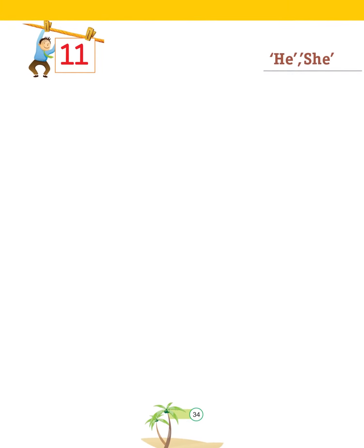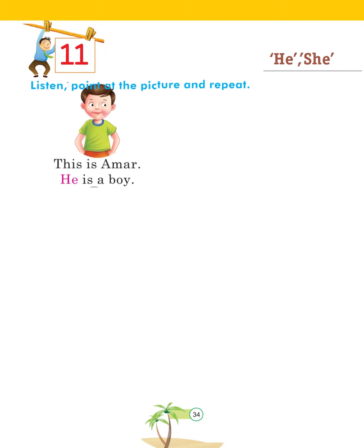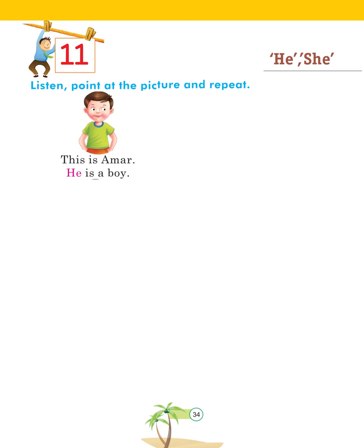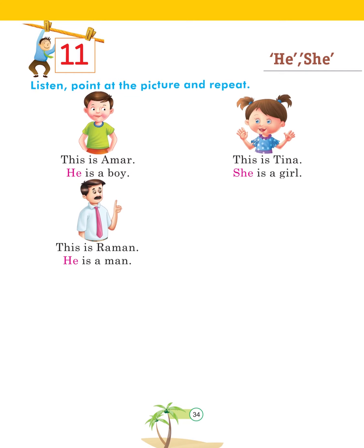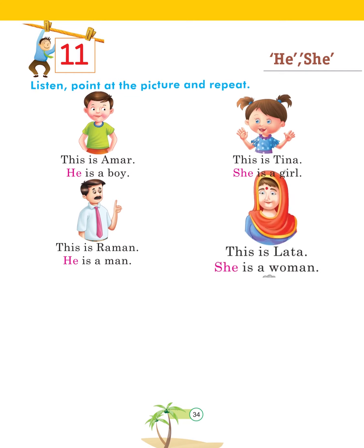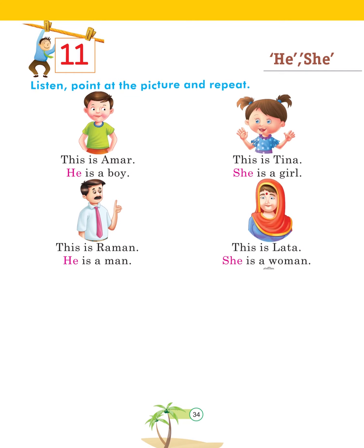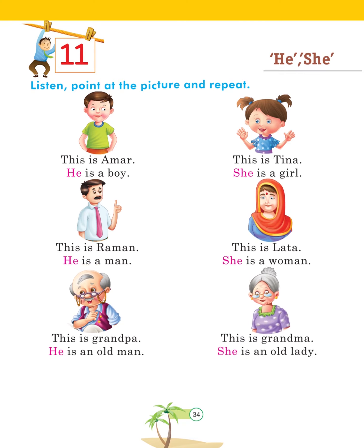Chapter 11: He / She. Listen, point at the pictures and repeat: This is Amar — he is a boy. This is Tina — she is a girl. This is Raman — he is a man. This is Lata — she is a woman. This is grandpa — he is an old man. This is grandma — she is an old lady.